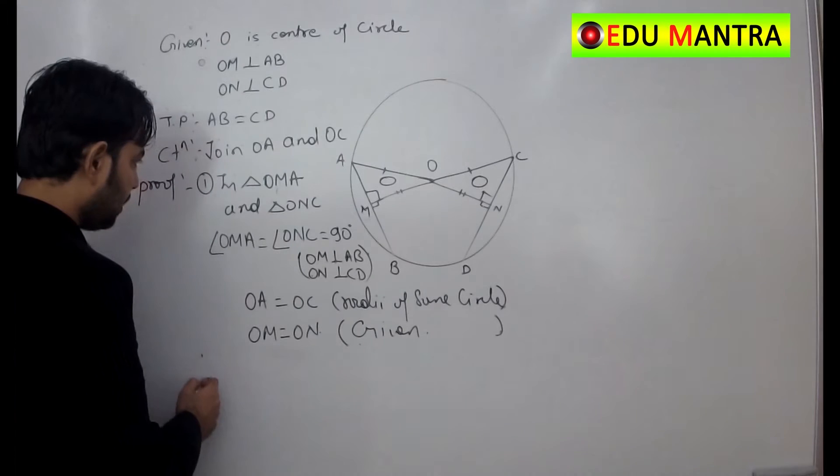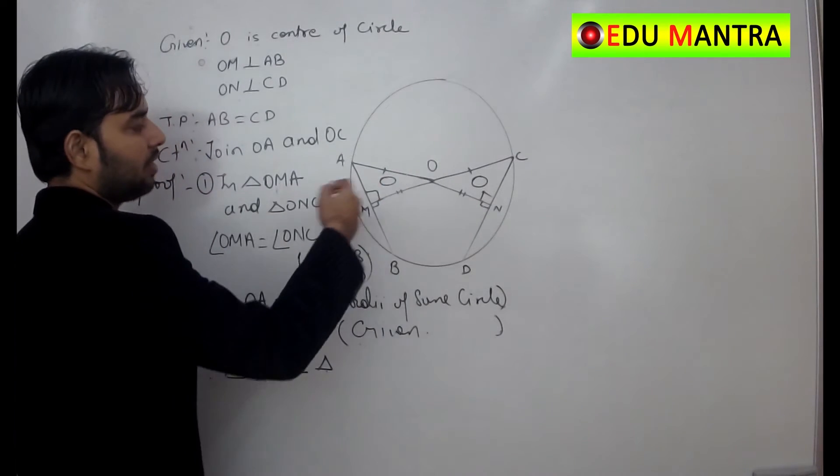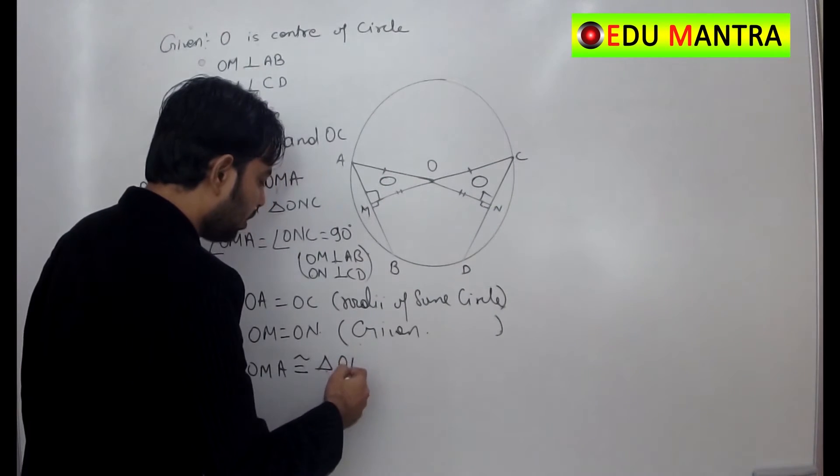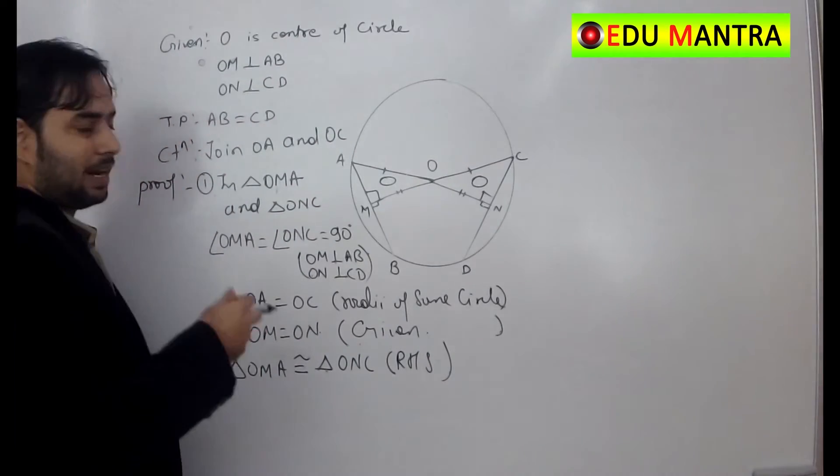Therefore triangle OMA is congruent to triangle ONC by right angle hypotenuse side. If triangles are congruent,